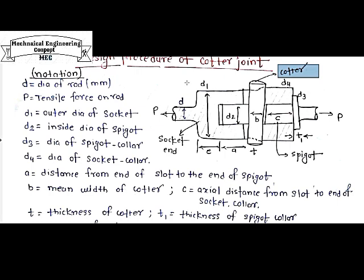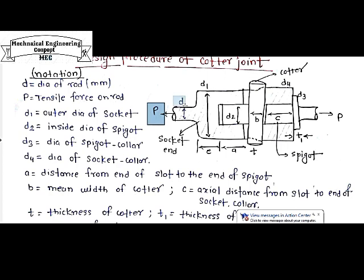This cotter joint is used to pull one end of the section from the other end. I apply tensile force P — here I am using capital P as the tensile force on the rod.